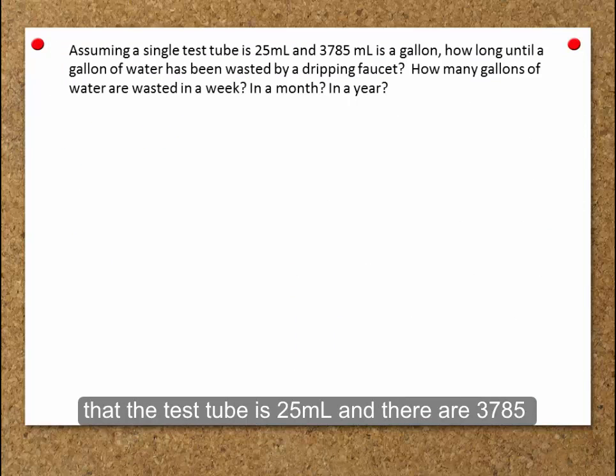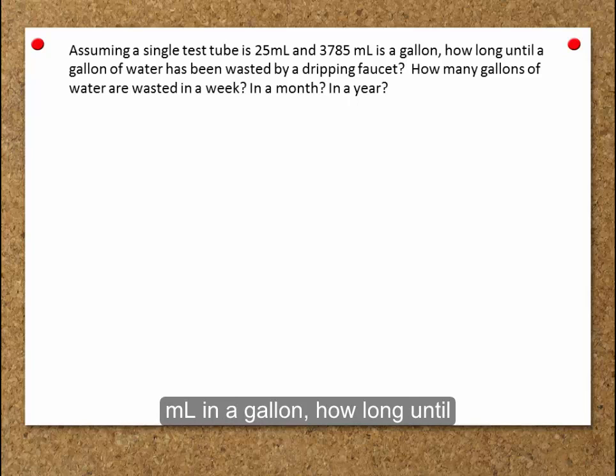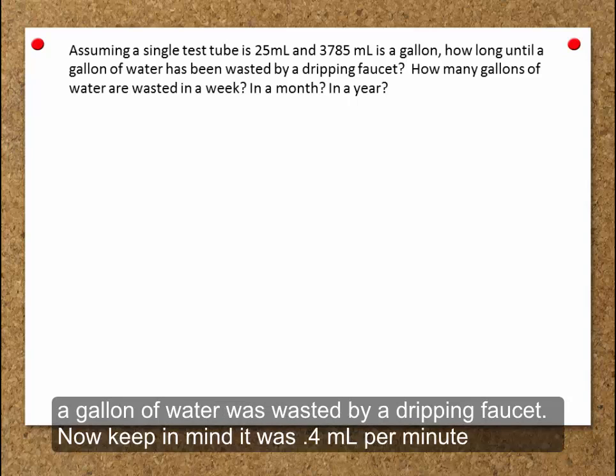Assuming that the test tube is 25 milliliters, and there are 3,785 milliliters in a gallon, how long until a gallon of water was wasted by a dripping faucet? Keep in mind it was 0.4 milliliters per minute.